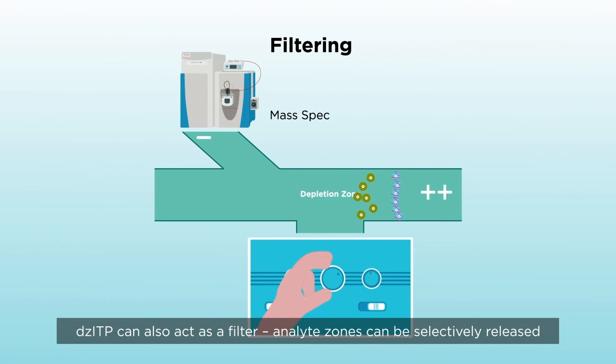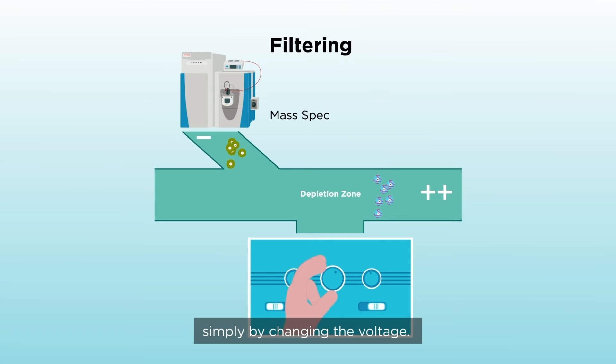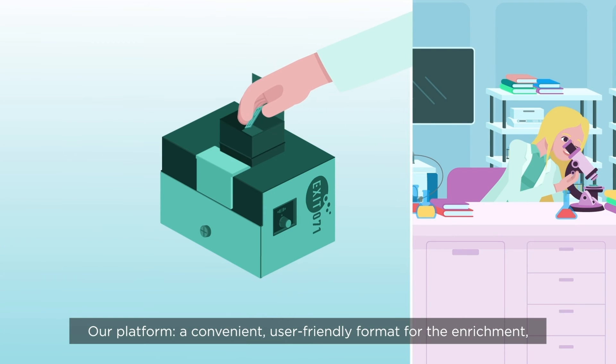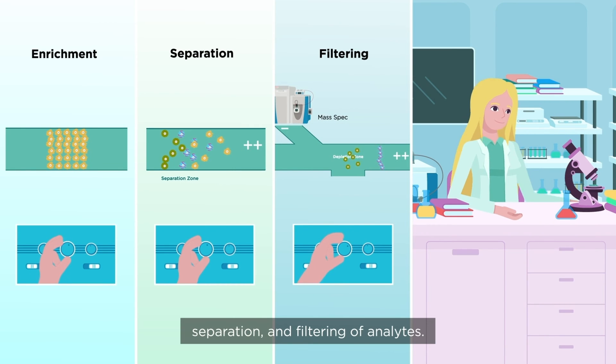DZITP can also act as a filter. Analyte zones can be selectively released simply by changing the voltage. Our platform is a convenient, user-friendly format for the enrichment, separation, and filtering of analytes.